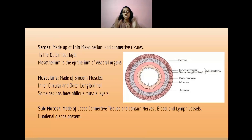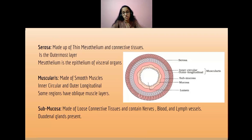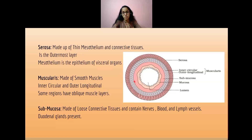The muscularis is made up of smooth muscles. Towards the inner side it has circular muscle cells, and towards the outer side it has longitudinal cells. Some regions also have oblique muscle layers in the muscularis. The submucosal layer is made up of loose connective tissues and contains nerves, blood vessels, lymph vessels, and Brunner's glands are also present in the submucosa.